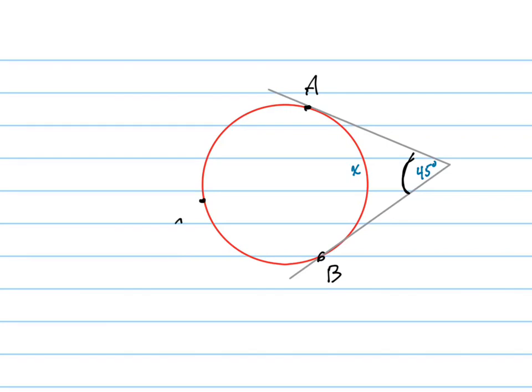This equals arc ACB. The 45 degree angle equals one half of the difference of arc ACB minus arc AB. This is the minor arc AB - that's the formula.